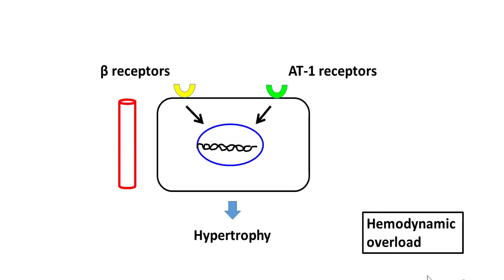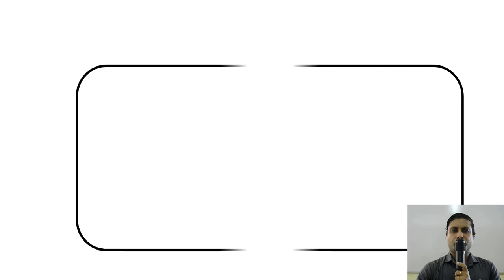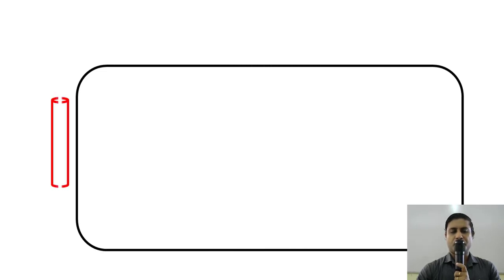Hemodynamic overload in the form of volume overload did result in hypertrophy. But it is important to understand that beta receptors and AT1 receptors, upon prolonged and sustained stimulation, contribute massively to the hypertrophy of the cardiac myocyte. Note that the capillary supply has not increased. This massive cell requires a lot more oxygen and blood supply, but it does not get it.